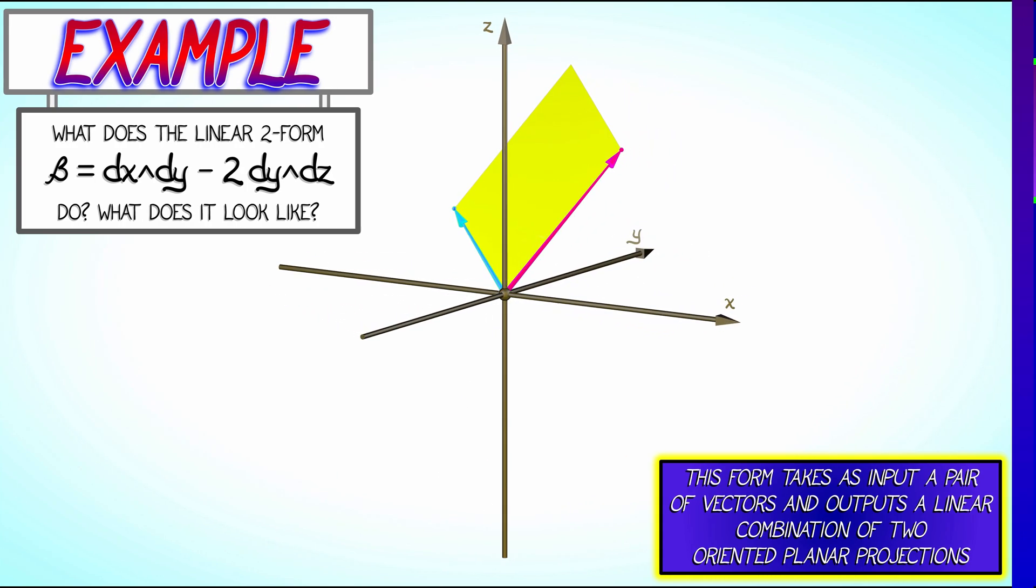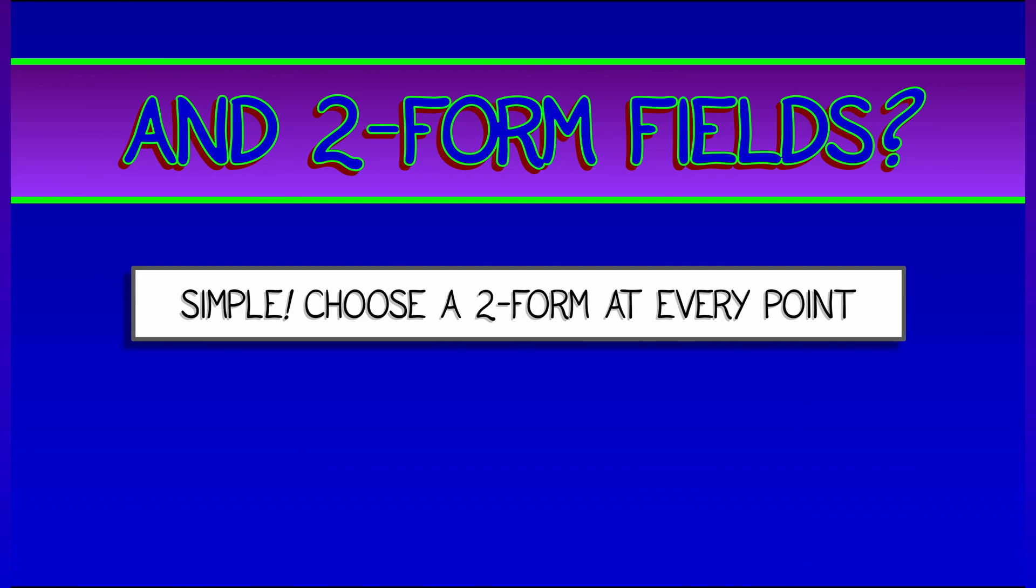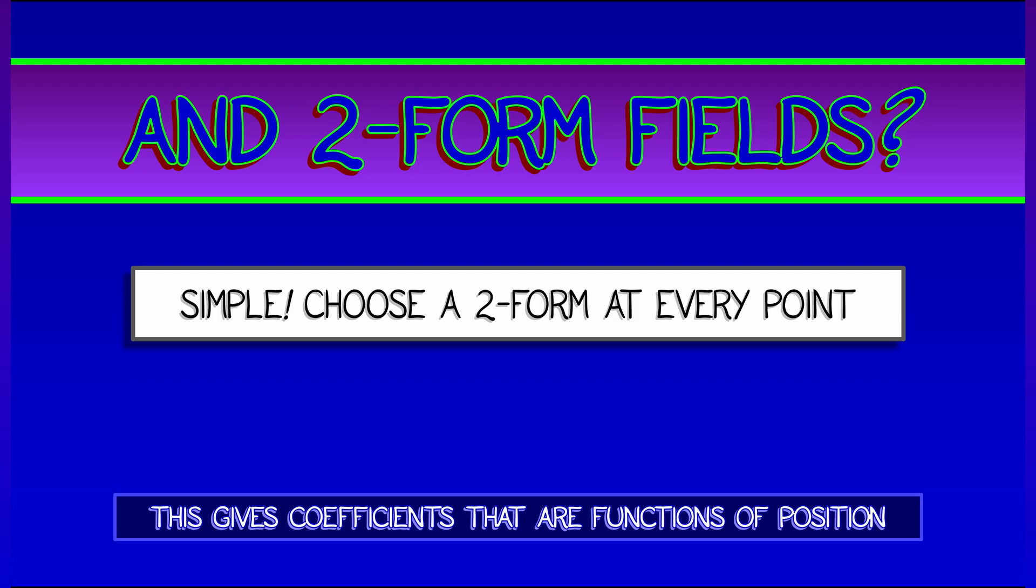Now, that's a little bit complicated, but that's just a linear two-form. What do you do with a two-form field? Well, that's really the same thing, but you are changing as you move from point to point. That can be a little complicated.